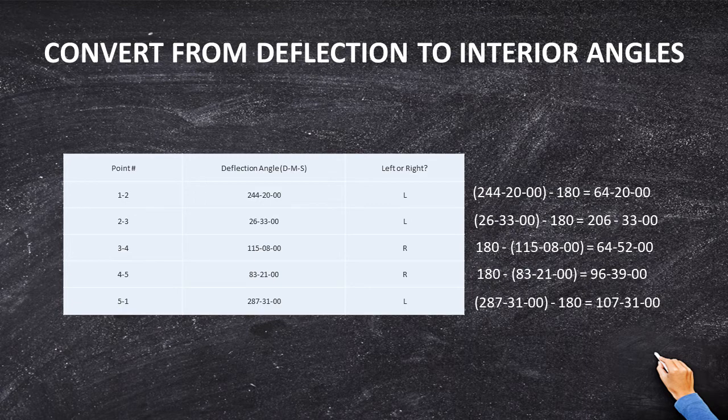Step one is to convert from deflection angles to interior angles. Angle 1-2 is 244°20'00" — this is a left angle, so 244°20'00" minus 180° equals 64°20'00". Next, angle 2-3 is 26°33'00" — also a left angle — so 26°33'00" minus 180° gives us 206°33'00".